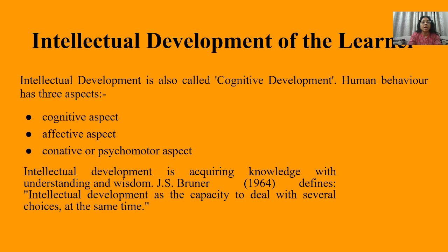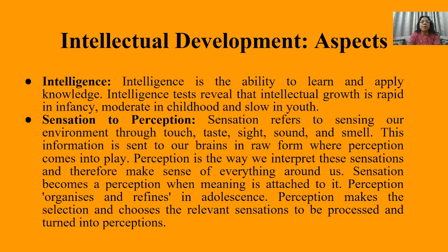J.S. Brunner defined intellectual development as the capacity to deal with several choices at the same time. This is a great definition — it means that at one time you have a lot of choices and you have the capacity to deal with them. Now, the first aspect of intellectual development is no doubt intelligence. If we have a development of intelligence, then we can say that we are intellectually developed people.